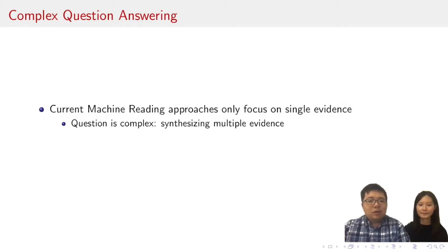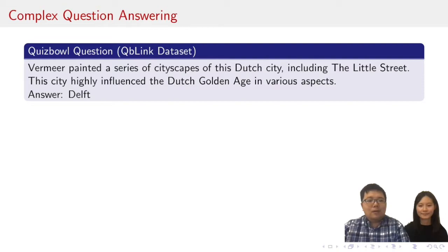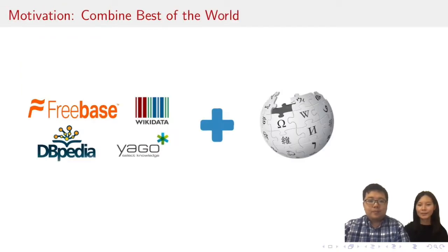These benchmark datasets find an answer from a single piece of evidence. In this work, we study answering complex questions instead. In realistic factoid QA problems, like answering Jeopardy or Quizball questions, multiple pieces of evidence need to be combined to point to the correct answer. Here's an example from the Qblink dataset, where questions come from the Quizball competition. There are common relations such as painting a series of cityscapes in the question. Would it be possible to mix both of the previous methods' advantages, to be able to answer questions by combining multiple evidences?